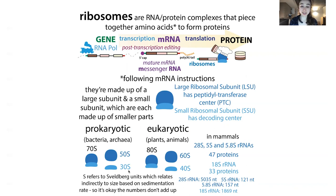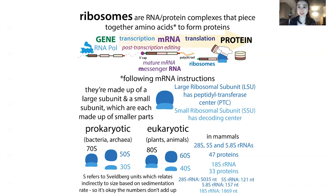This S refers to Svedberg units, which relates indirectly to size — it's based on the sedimentation rate. How heavy something is determines how far it sinks during sedimentation. Bigger things are going to sink more, but it's not a linear relationship, which is why 50 plus 30 doesn't equal 70.